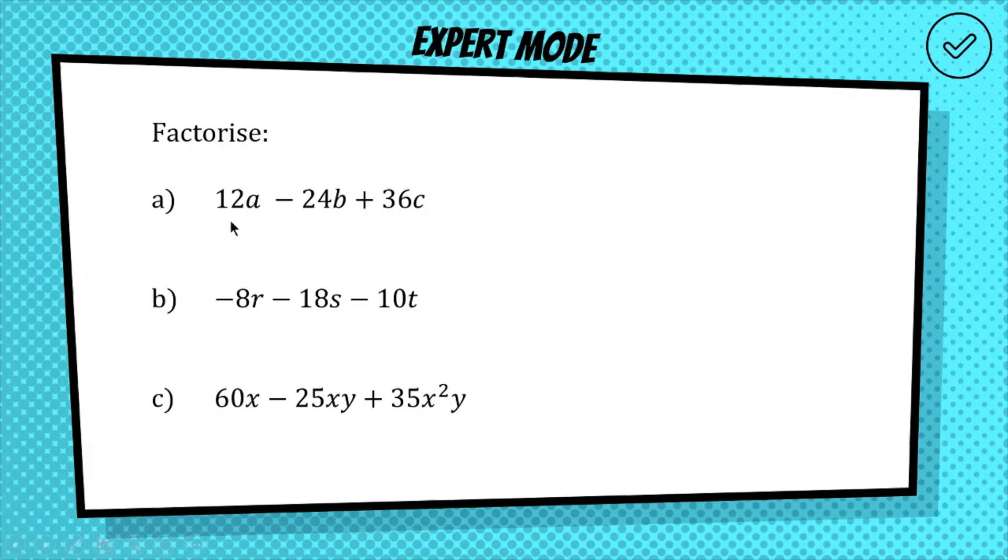So with the first question, instead of having two terms, we now have three terms, but our process is the exact same. We look at all three terms, and we look for a common factor. We've got 12a, negative 24b, and positive 36c. There are no common letters, so there's nothing algebraic we can factor out, but 12, 24, and 36 are all multiples of 12. So 12 is a common factor that we can factor out the front.